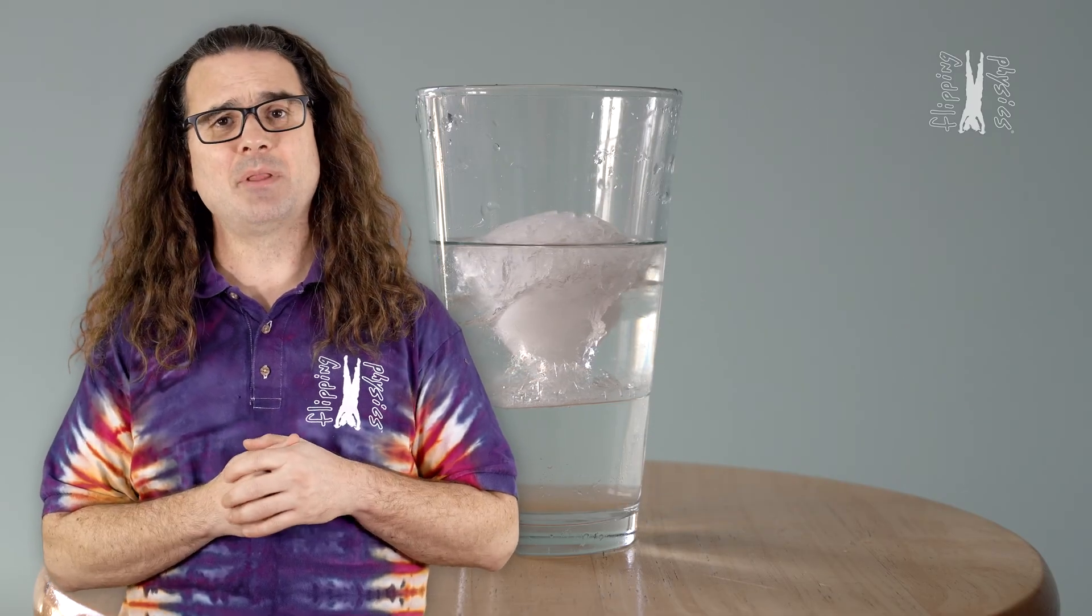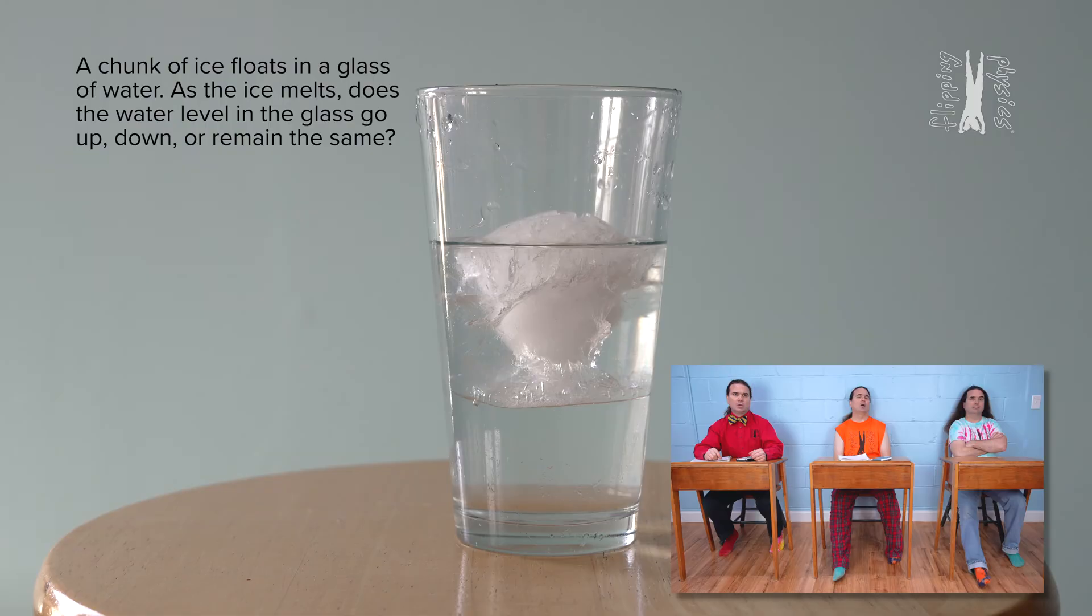Bobby, please read the problem and Billy, please translate. A chunk of ice floats in a glass of water. As the ice melts, does the water level in the glass go up, down, or remain the same?